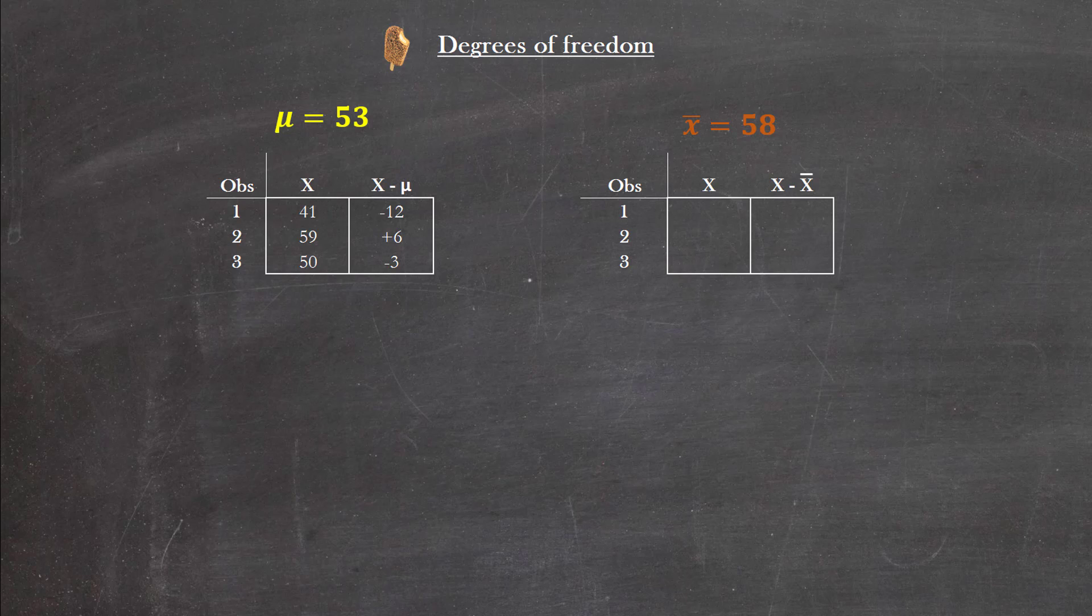Now contrast this with the scenario where we might have the sample mean given to us instead of the population mean. So here we've got the same idea - the first two observations, the first one happens to be 61 in this case and the second is 51, and the deviations there are plus 3 and minus 7 from our sample mean. So you can see here I've got x̄ as opposed to μ in the previous table. Now what can our third observation be in this case?